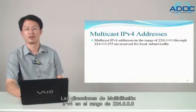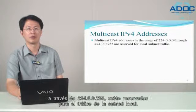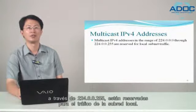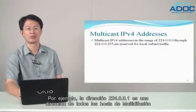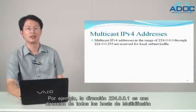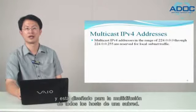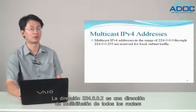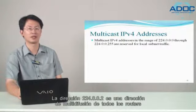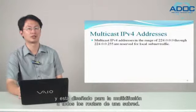Multicast IPv4 addresses in the range of 224.0.0.0 through 224.0.0.255 are reserved for local subnet traffic. For example, the address 224.0.0.1 is an all-hosts multicast address designed for multicasting to all hosts on the subnet. The address 224.0.0.2 is an all-routers multicast address designed for multicasting to all routers on a subnet.